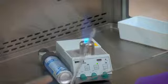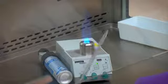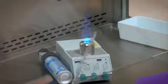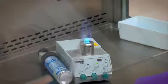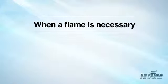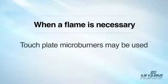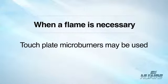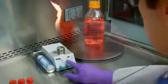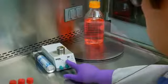An open flame in a BSC, however, creates turbulence, which disrupts the pattern of air supplied to the work surface. When deemed absolutely necessary, touch-plate micro-burners equipped with a pilot light to provide a flame may be used. This will minimize internal cabinet air disturbance and heat buildup. The burner must be turned off when work is completed.